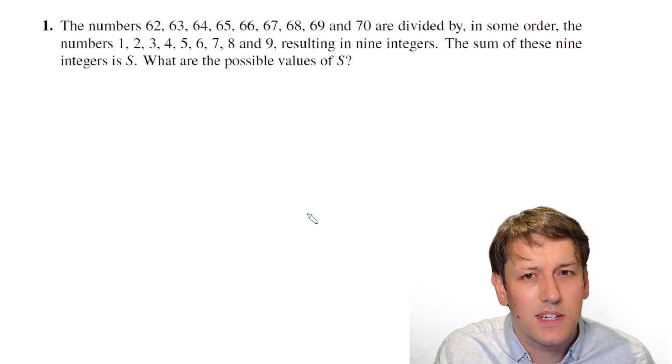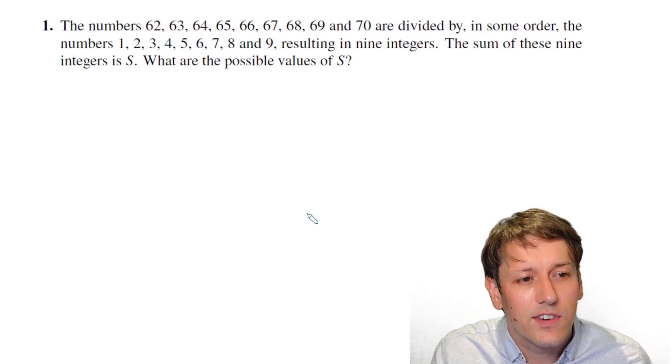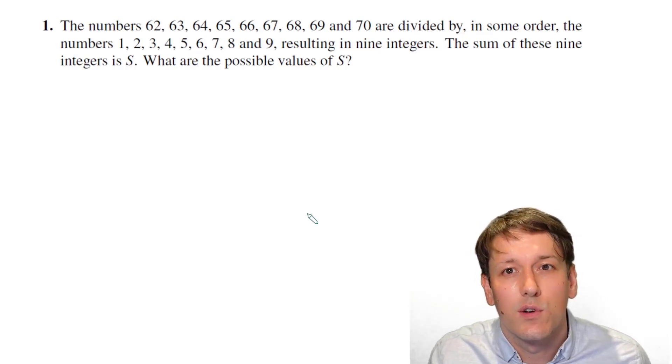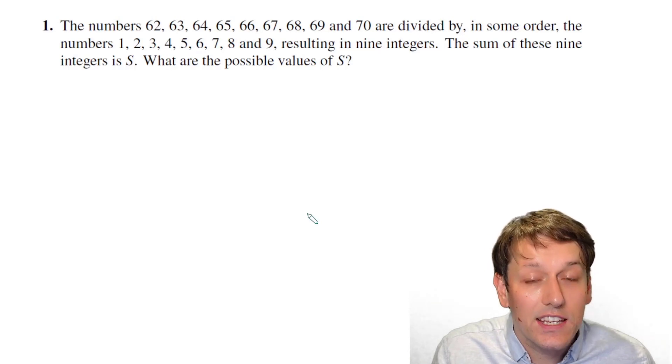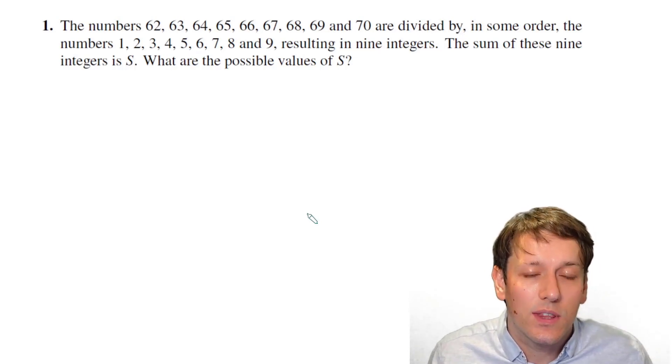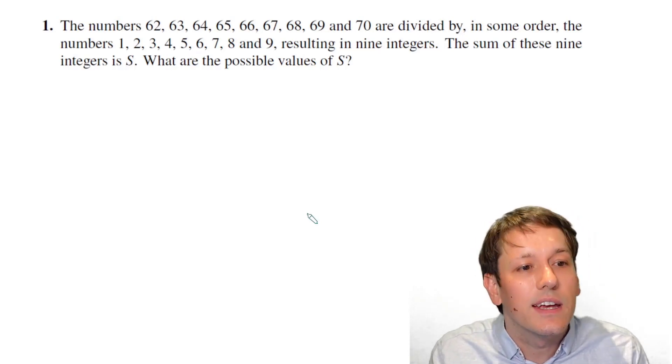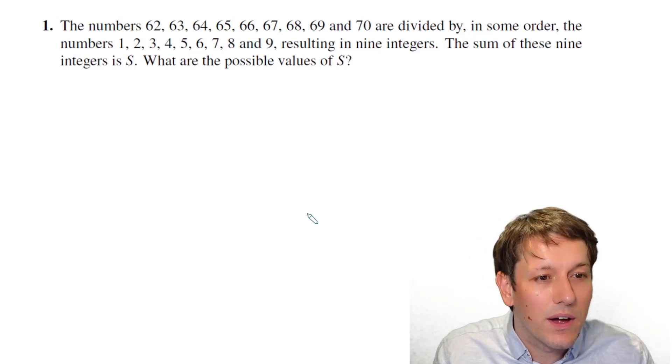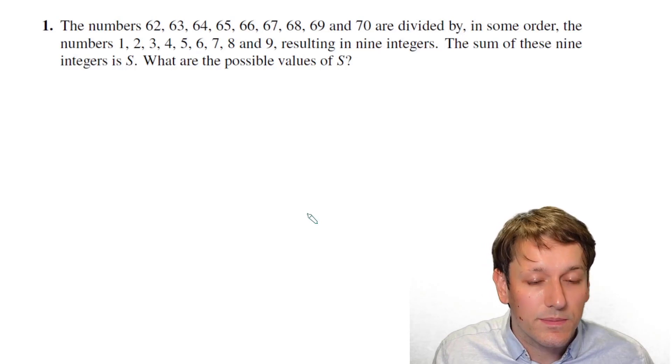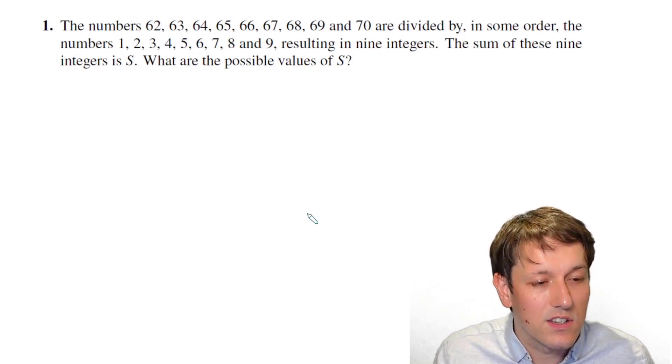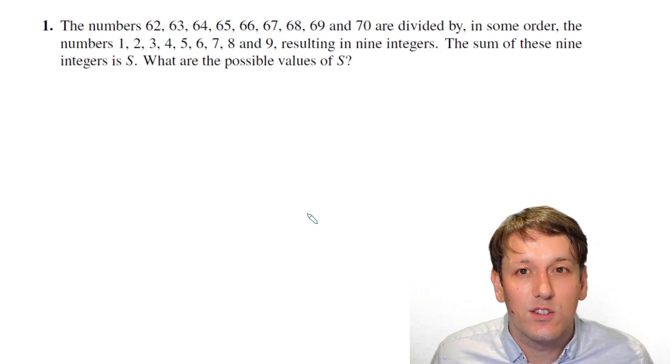So we've got this set of numbers from 62 to 70, and we're going to divide each of them by one of the numbers from 1 to 9, and that will result in 9 integers, so 9 whole numbers. So that's our first clue here. We can only divide numbers by things that they're multiples of, otherwise we won't get integers as a result.